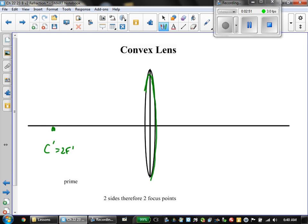We only use primes to distinguish the same side from the other side. We have the other side of the lens, and again, same idea.